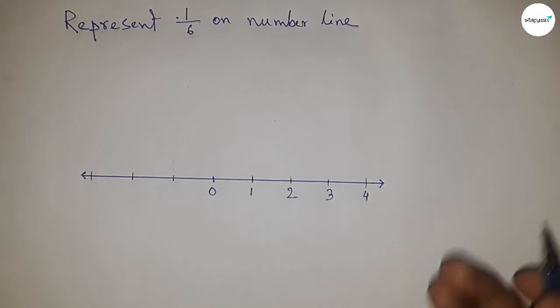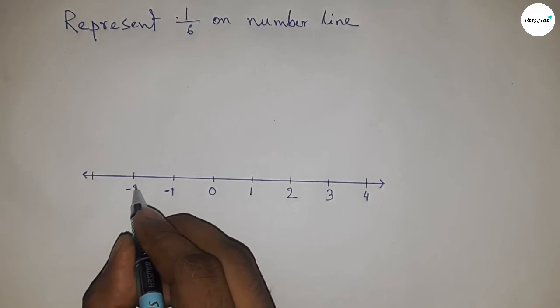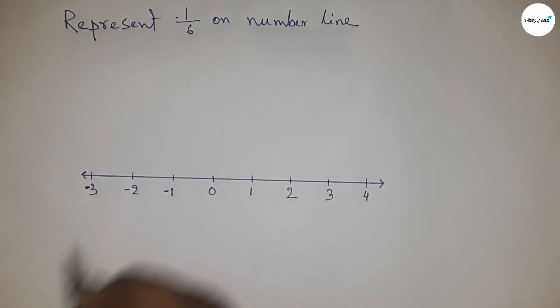Okay, so this side: 0, 1, 2, 3, 4 and so on, and this side: minus 1, minus 2, minus 3 and so on.